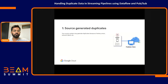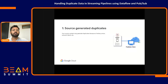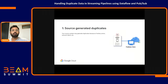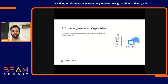The first place where you may see duplicates is fairly straightforward — your source system itself may generate duplicates. These systems could be your IoT devices or applications generating these messages. Because of some network error or just an error in the system, it may produce duplicate records. That's what we call source-generated duplicates.